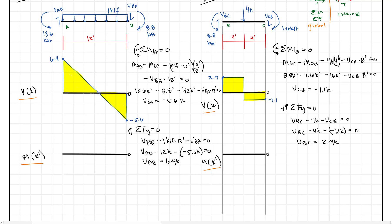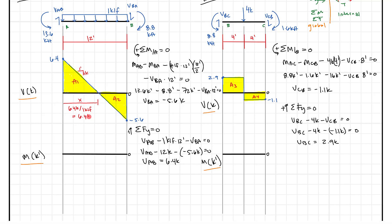So there are our two shear diagrams. What I like to do is label these areas because as we integrate the area of the shear, we're going to get our moment. I'll call this A1, A2, A3, and A4. We should be able to find these areas fairly reasonably. The distance x isn't just in the middle of the beam — this distance equals the height of the shear divided by the slope of the line, which equals the uniform load. So for every one foot we come over, we come down one kip. So 6.4 kips divided by one kip per foot equals 6.4 feet.